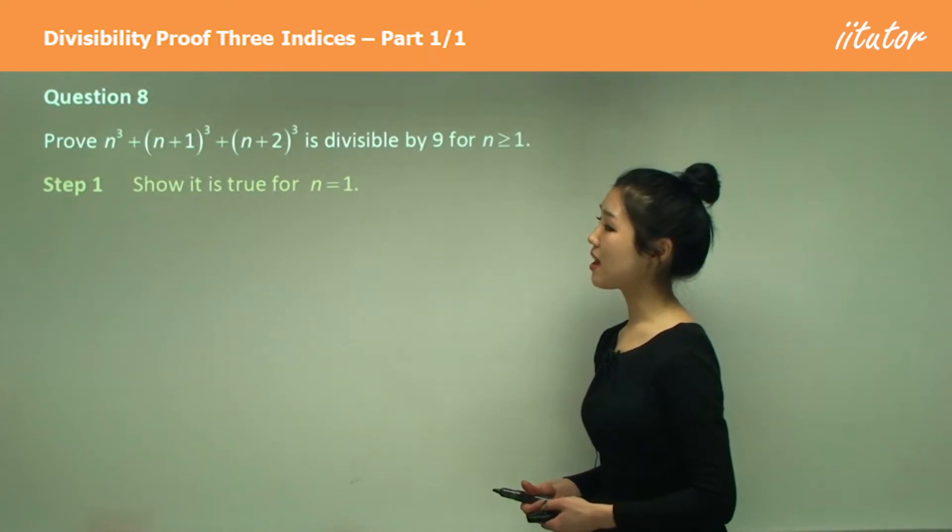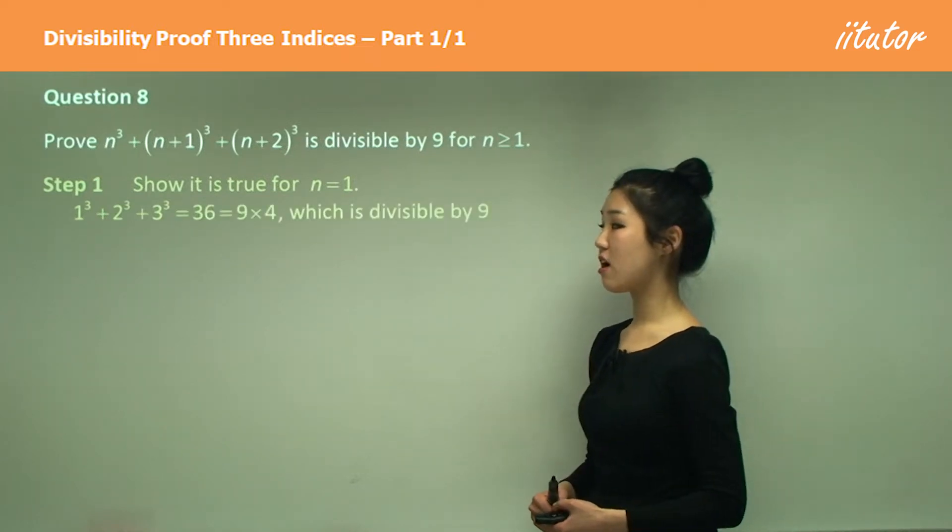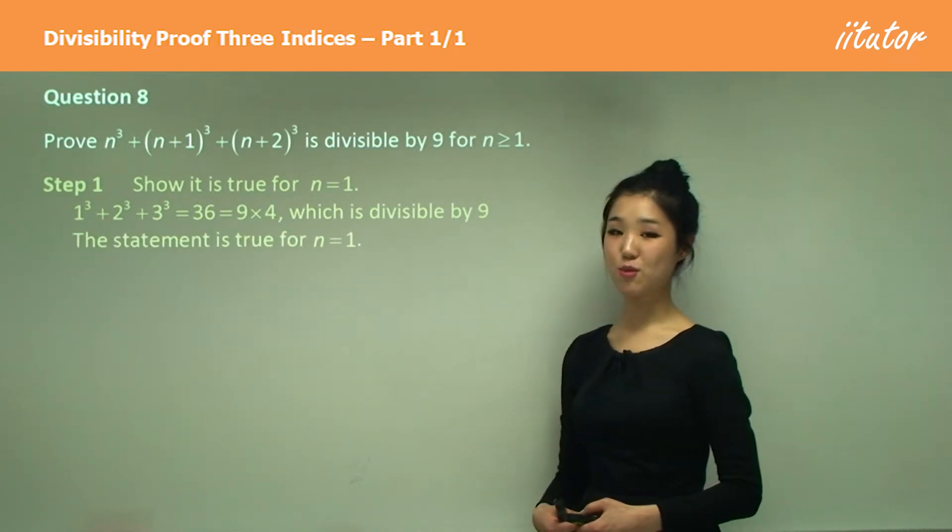So substitute n equals 1 just into the whole thing, just like that, which you'll get as 36. And we know that 36 is 9 times 4, which is definitely divisible by 9. Therefore, it's true for n equals 1.